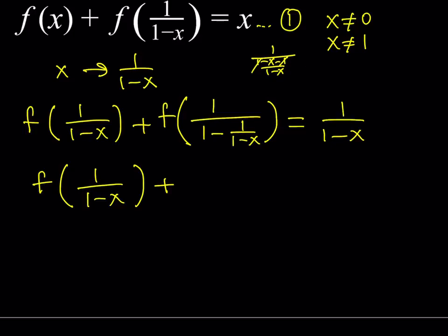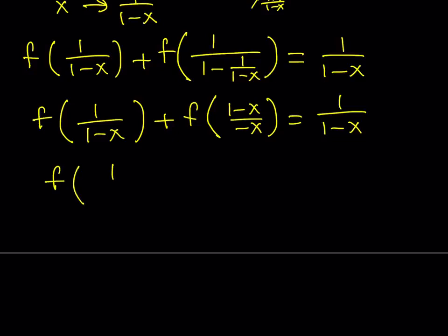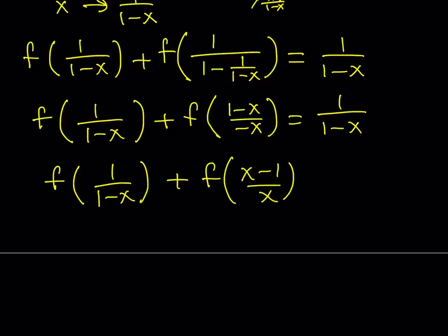But we have the reciprocal of that term, so it becomes f((1-x)/(-x)). We don't want to write it that way, so let's negate the top and bottom to write it as f((x-1)/x) — that looks nicer. So equation 2 is: f(1/(1-x)) + f((x-1)/x) = 1/(1-x).